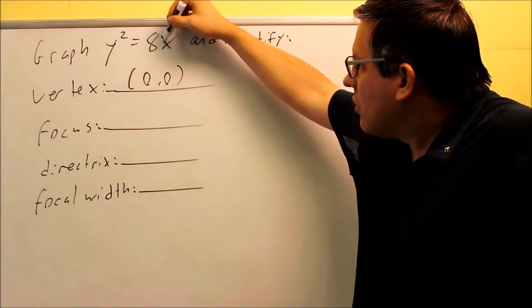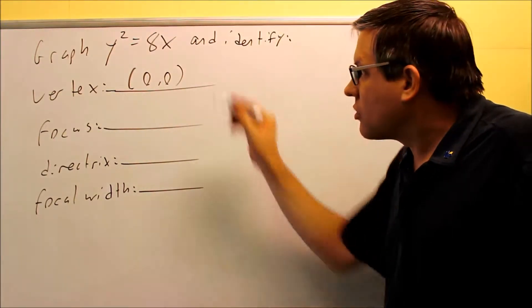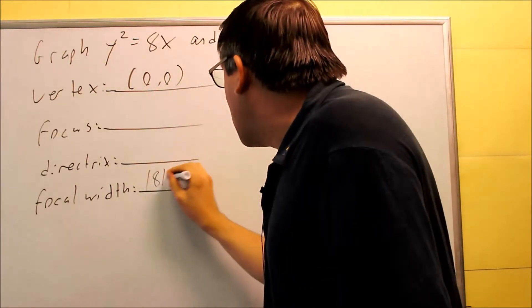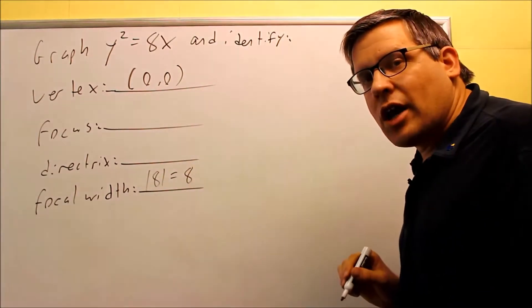That is always going to be the absolute value of the number in front of the non-squared variable. So in that case, we're going to do absolute value of 8, and that's going to equal 8. So now we have that one.